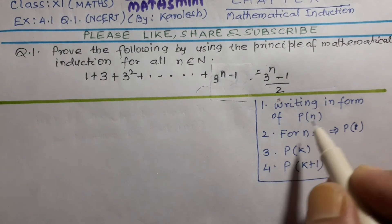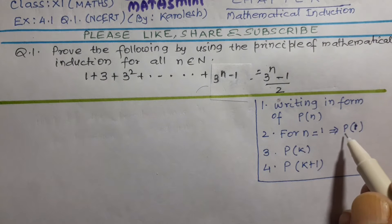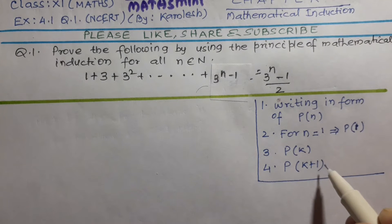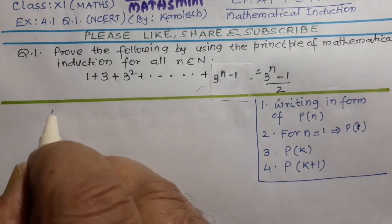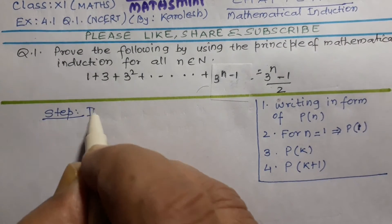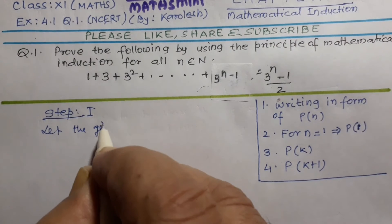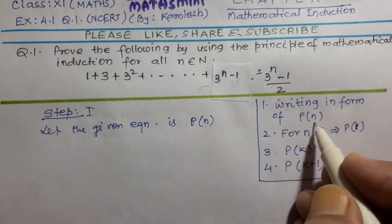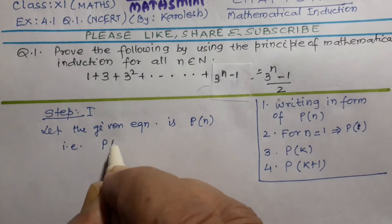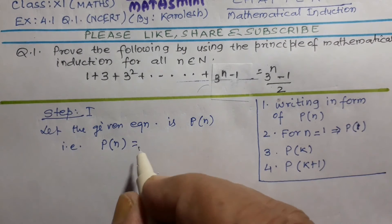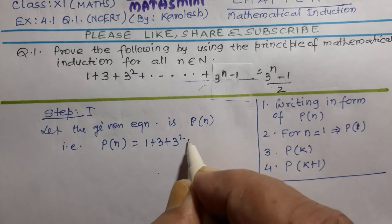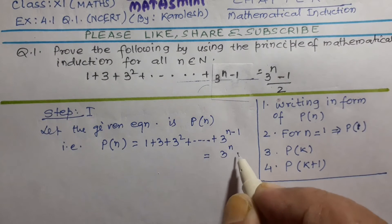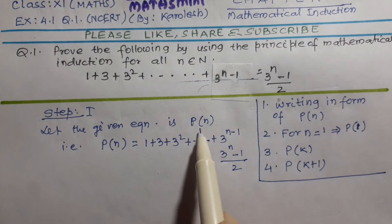Step 1: Write the equation in the form of P(N). For N equal to 1, we write P(1); for any positive integer K, we write P(K); and for K plus 1, we write P(K+1). So, P(N) equals 1 plus 3 plus 3 squared plus dot dot dot plus 3 to the power n minus 1, equal to 3 to the power n minus 1 divided by 2.